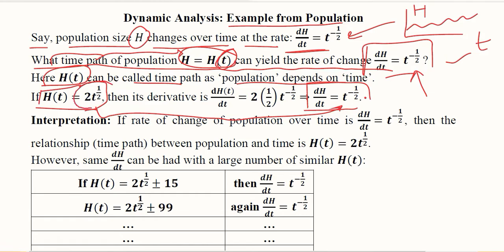If we assume this is the primitive function, you can see the derivative: 2 comes outside as a coefficient, and 1 over 2 is also the power. The power 1 over 2 minus 1 becomes minus 1 over 2. These two get cancelled out and we have the derivative that we were given. So it means that if we assume this is the population function or the primitive function, it would be correct.